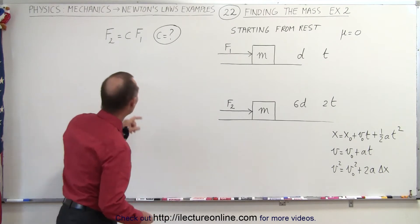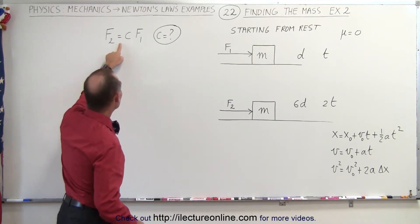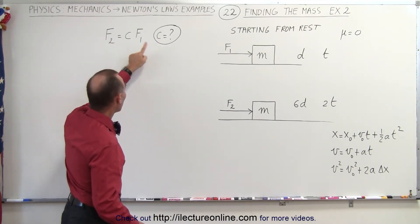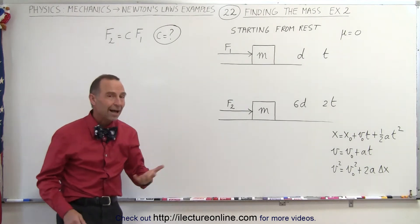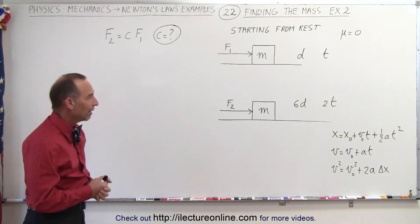So now what we're trying to do is say, well if f2 is some constant times f1, what is that constant? How many times is f2 equal to f1?